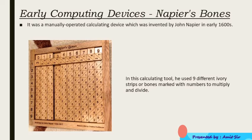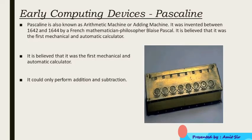The next device we are going to talk about is called Pascaline. Pascaline is also known as the arithmetic machine or adding machine. It was invented between 1642 and 1644 by a French mathematician and philosopher, Blaise Pascal. It is believed to be the first mechanical and automatic calculator. It could only perform addition and subtraction.